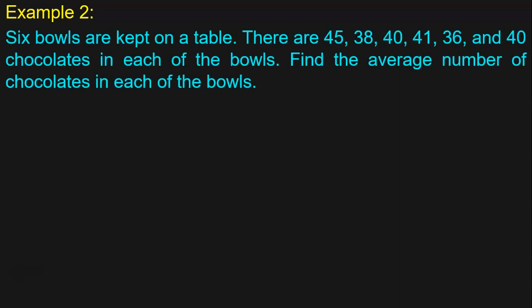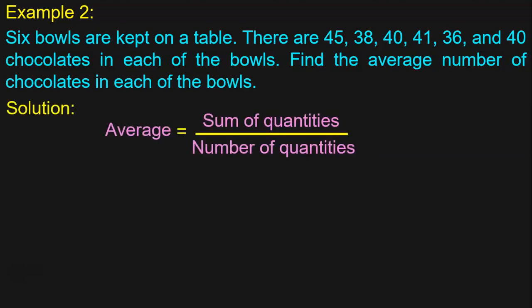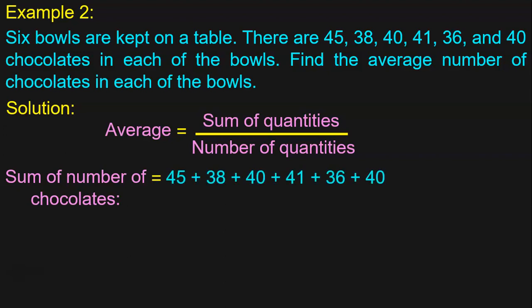Let us take another example. 6 bowls are kept on a table. There are 45, 38, 40, 41, 36, and 40 chocolates in each of the bowls. Find the average number of chocolates in each of the bowls. Write down the formula: average is equal to sum of quantities by number of quantities. Here, the quantities are the chocolates placed in each bowl. Now we have to find out the sum of the number of chocolates: 45 plus 38 plus 40 plus 41 plus 36 plus 40. Once again, we have to do vertical addition.